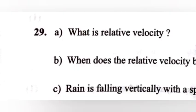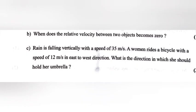Question 29. Part a: What is relative velocity? Answer: It is the velocity of one body with respect to another. Part b: When does the relative velocity between two objects become zero? Answer: When the two objects are moving with the same velocity or same speed in the same direction.